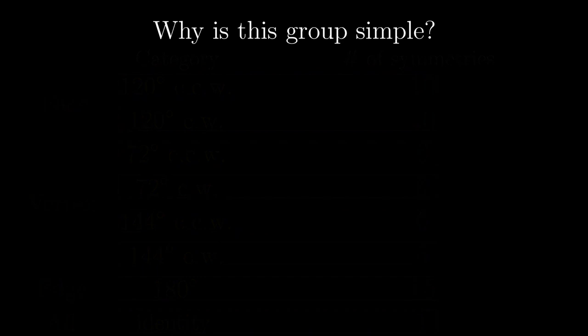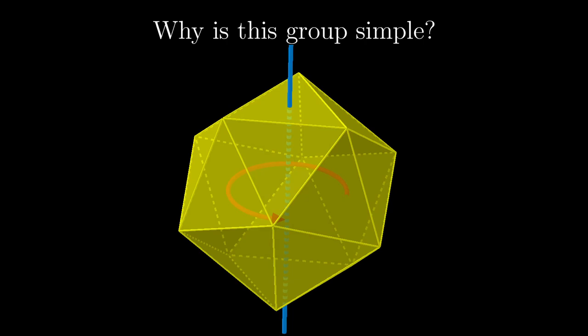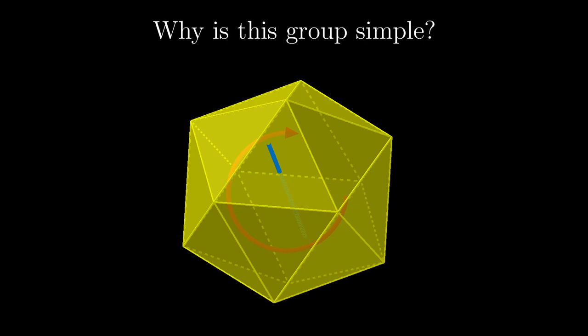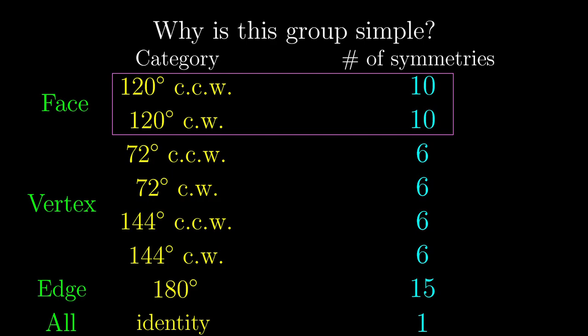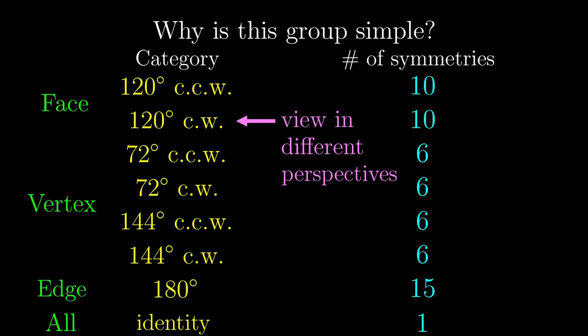We can do better though. Let's say we have an anti-clockwise rotation about this axis. By rotating our perspective upside down, we have exactly the same rotation axis, but it now becomes a clockwise rotation. In other words, if we pick anything from the first category, just by viewing it in different perspectives, we also have to pick something from the second category as well. That means, everything from these two categories need to be chosen as well.